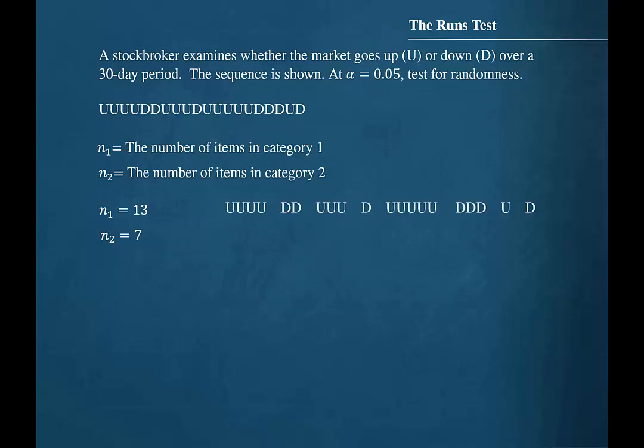We also need to know the number of runs that appear in the sequence. When we put spaces between the runs in the dataset, we can see that there are 8 runs. The letter G is used to represent the number of runs in a dataset, so in this case, G is equal to 8.